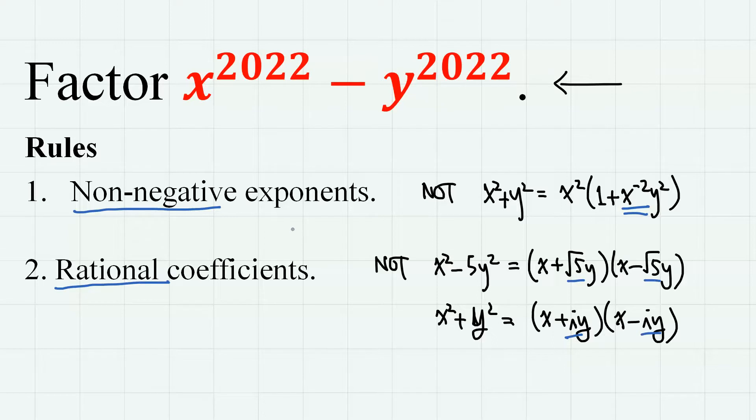First we must factor 2022 into prime numbers. So 2022 is 2 times 1011, and 1011 is 3 times 337. So 2022 has three distinct prime factors.